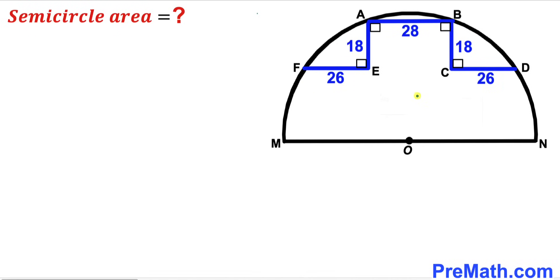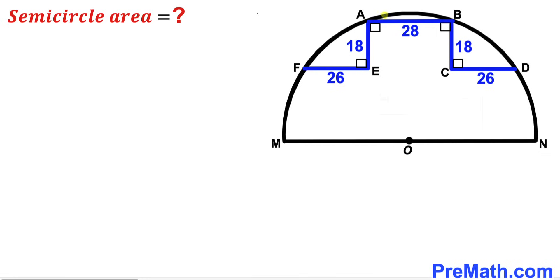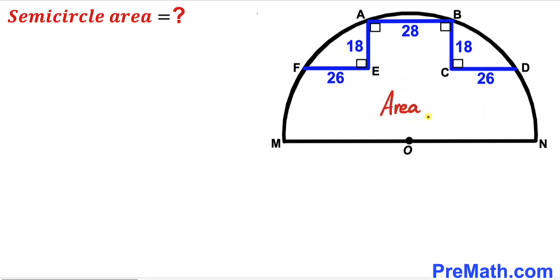Welcome to pre-math. In this video we have got a semicircle with center A and diameter MN, such that chord AB is 28 units, segments BC and AE are 18 units each, whereas segments EF and CD are 26 units each. All angles are 90 degrees each, and our task is to calculate the area of this semicircle.